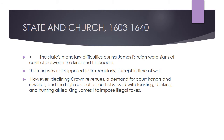The state's monetary difficulties during James I's reign were signs of conflict between the king and his people. The king was not supposed to tax regularly except in time of war. However, declining crown revenues, a demand for court honors and rewards, and the high cost of a court obsessed with feasting, drinking, and hunting all led King James I to impose illegal taxes.